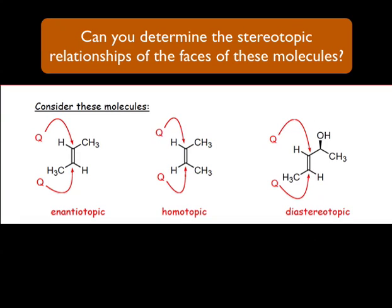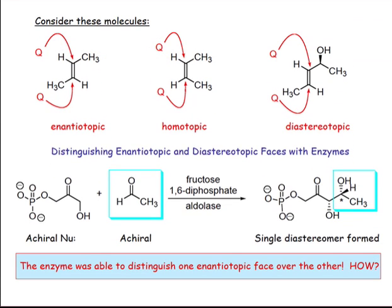Consider the three molecules shown here. Based on what we learned in the last webcast, you should be able to distinguish the faces of these alkenes as enantiotopic, homotopic, and diastereotopic.